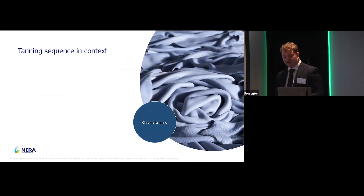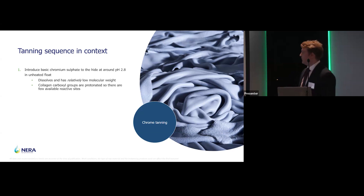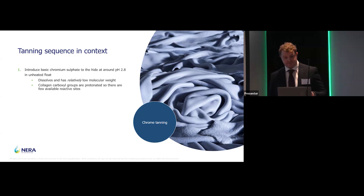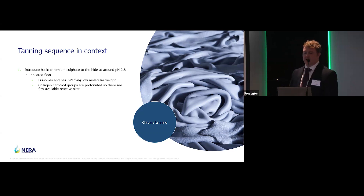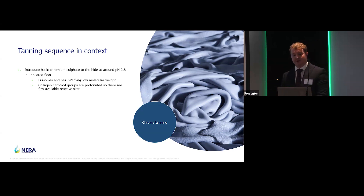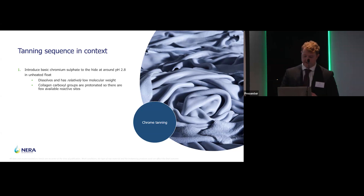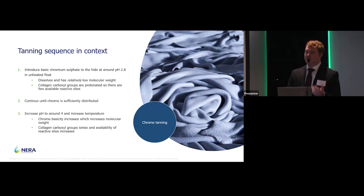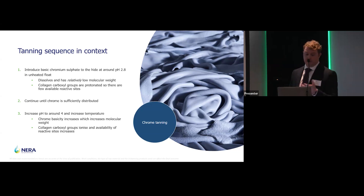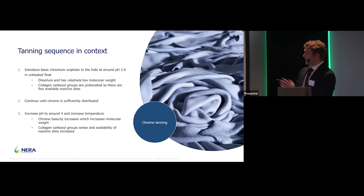Putting that into context — looking at chrome tanning — first of all you'll introduce your basic chromium sulphate into your drum somewhere in the region of pH 2.8 in unheated flow, and that will dissolve. At this low pH, it has a relatively low molecular weight compared to later on in the process, so it's less reactive. And also, your reactive sites — the carboxyl groups on the collagen — they're protonated, so there aren't very many reactive sites for the chrome to interact with and fix. You wait until you get distribution, and then you increase your pH somewhere in the region of 4 and increase your temperature. In doing so, you increase the basicity of your chromium, which increases the molecular weight and makes it more reactive. Those carboxyl groups ionize, become available, and you can fix in place. And what you end up with, obviously, is your wet blue.